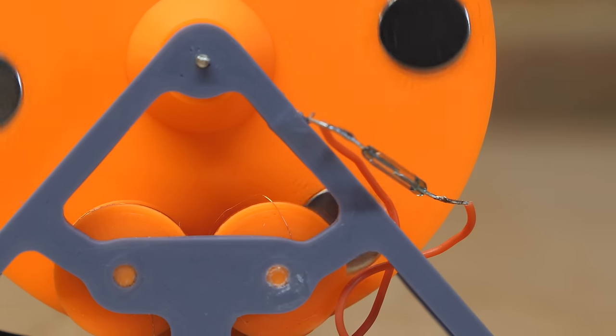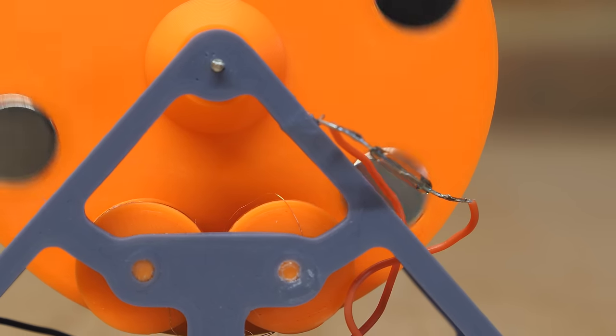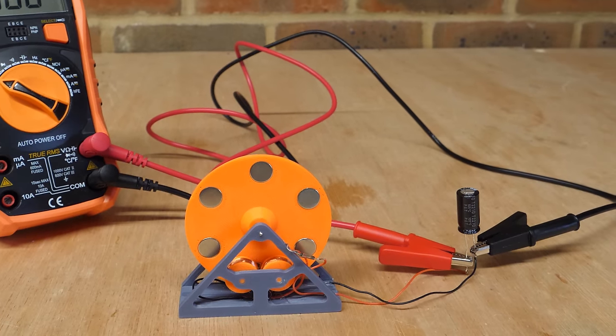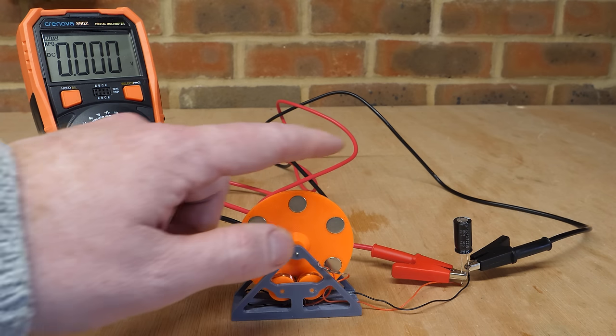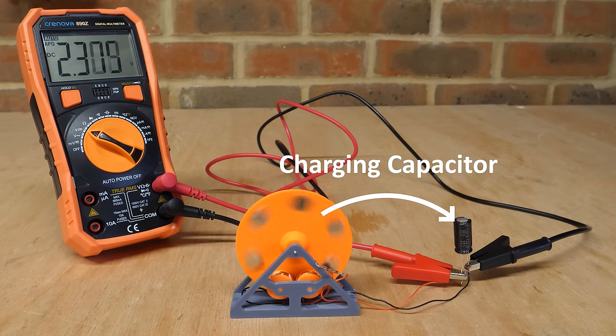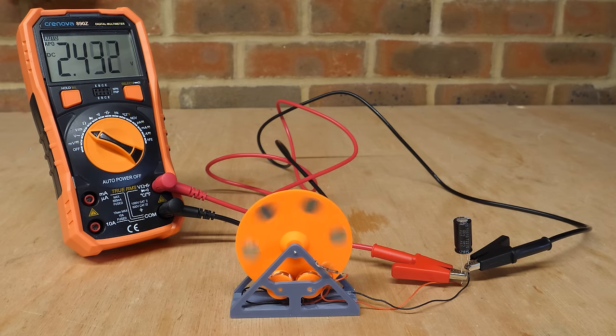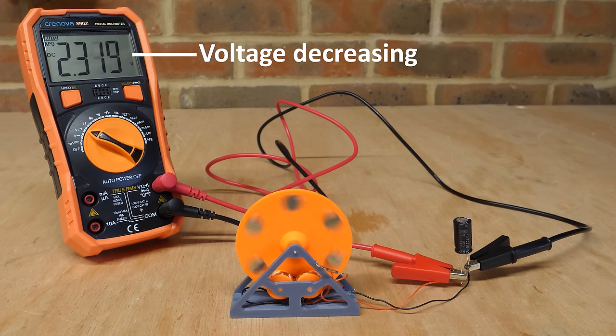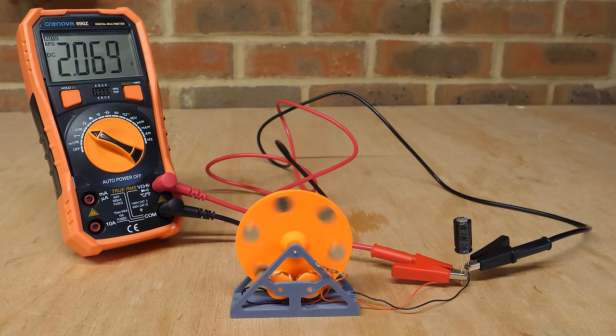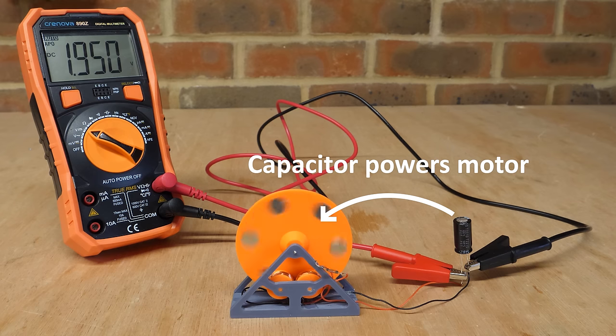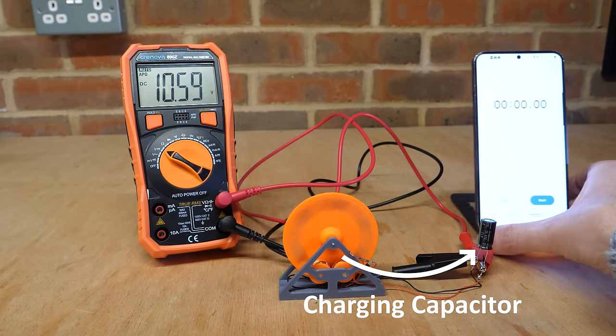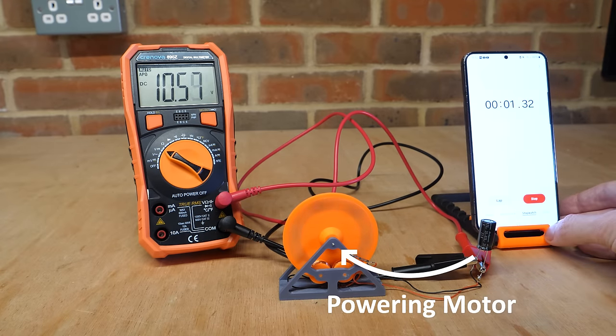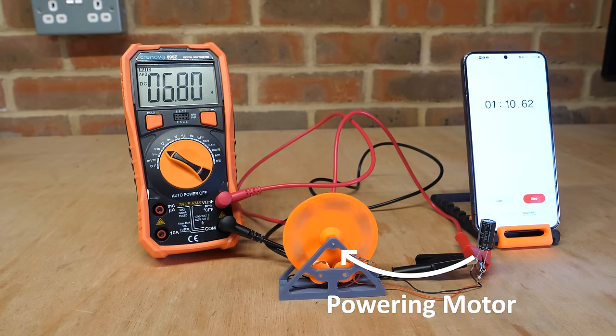Now in theory, this motor should also work as a generator if I spin the wheel by hand. So here I've connected a capacitor to the input of the motor, which as you can see from my voltmeter is completely discharged. Therefore, if I spin the motor by hand, it should act as a generator and charge the capacitor. But notice what happens once the voltage peaks in the capacitor, it starts to discharge. And this is because the voltage in the capacitor is now higher than what's been generated in the coils. And therefore the capacitor is now powering the motor. So if I spin the wheel up to high speed, the capacitor charges up as it stores energy, then it automatically switches from a generator to a motor and runs continuously for several minutes.